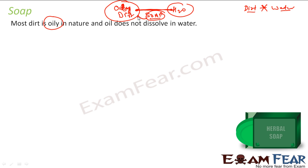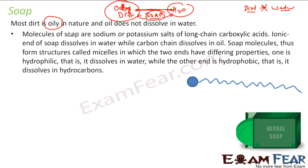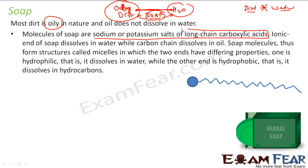Soap is something which dissolves in oily dirt and also dissolves in water. Effectively, that oily dirt will dissolve in water using soap. What are soaps? Soaps are nothing but sodium or potassium salts of a long chain of carboxylic acid. So I have a long chain of carboxylic acid here — you can see this is carboxylic acid — and I have sodium or potassium here. This is an ionic end. This ionic end dissolves in water.